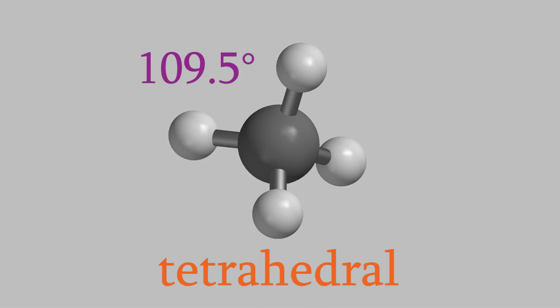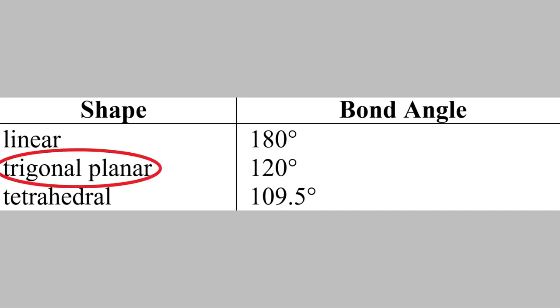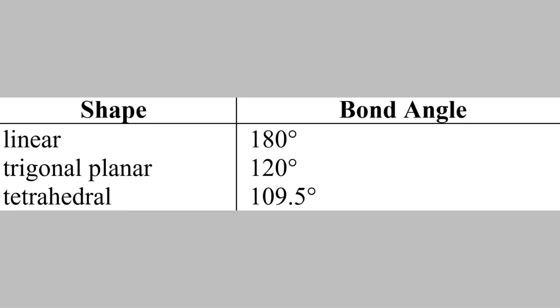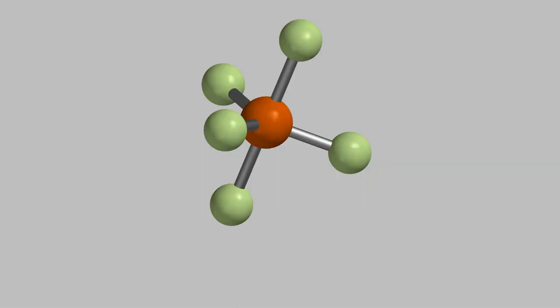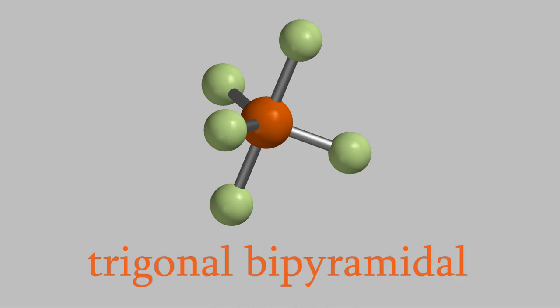So now we know the shapes and angles for molecules with two, three, or four bonds on the central atom. We don't usually draw Lewis structures for molecules with five or more bonds on the central atom, but they definitely exist. When we have five bonds, we get a molecule like phosphorus pentafluoride, which looks like this. This shape is called trigonal bipyramidal.